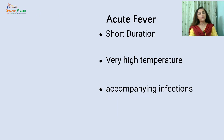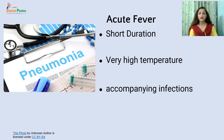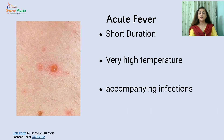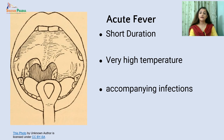Acute fevers are fevers of short duration, but body temperature may rise even above 104 degrees Fahrenheit. Some fevers are associated with infections — for example, pneumonia, influenza, chickenpox, tonsillitis, or typhoid.